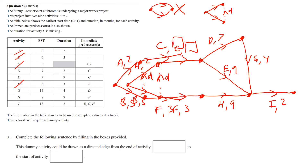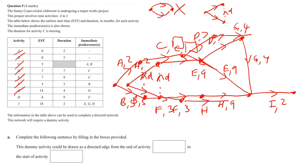Now D and E both need to come off C, so we go D comma 7 and E comma 9. Then G has to come off D, so G comma 4. H has to come off F, so that's H comma 9. Then I is all three of those connected together — do a nice right angle — and that's I comma 2. That's our diagram for that section.